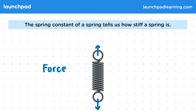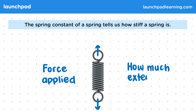When a known force is applied to the spring, the spring constant can be used to calculate the extension that this force causes. The extension is the force applied divided by the spring constant.